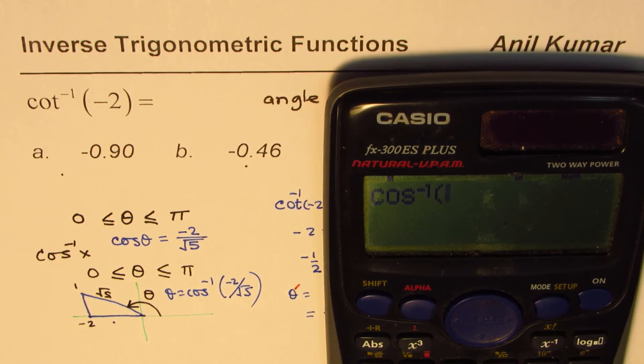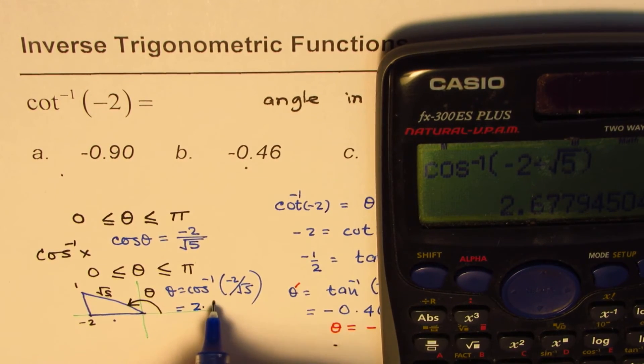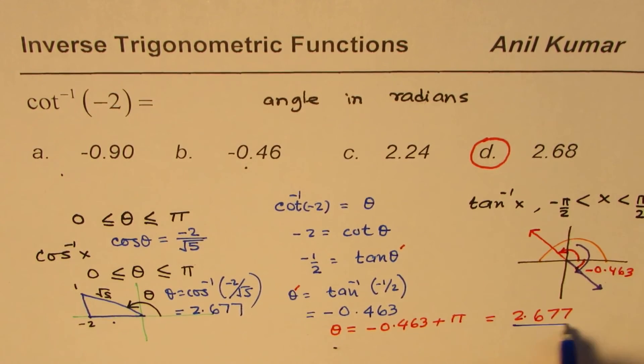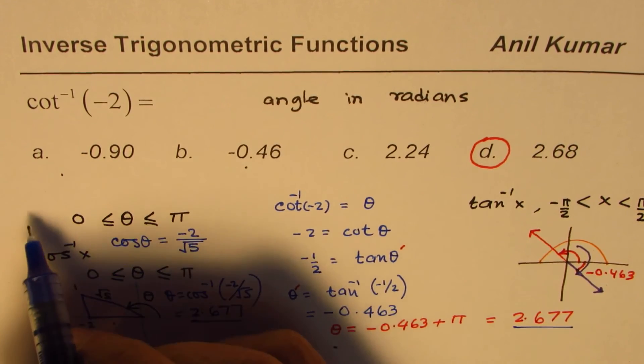So we have cos inverse of minus 2 divided by square root of 5, bracket close, equal to. So we get the direct answer which is equals to 2.677, exactly same as we got earlier.